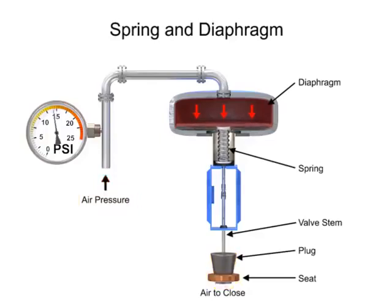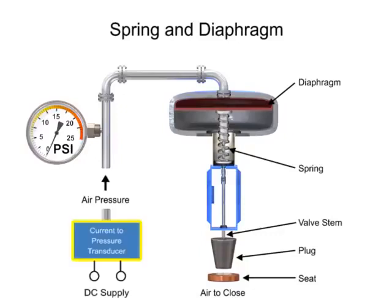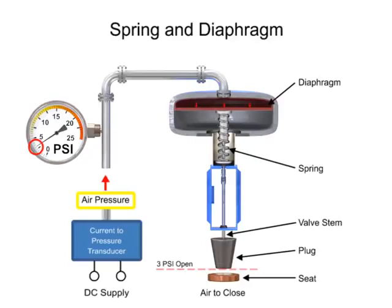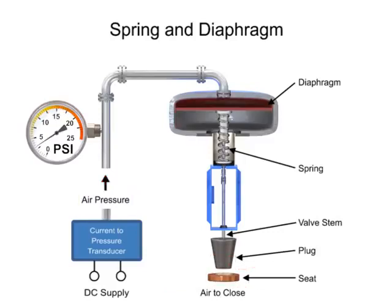With no air pressure, the restrictor is pushed upward by the spring to act as a normally open control valve. To vary the position of the restrictor and flow through the valve, a current to pressure transducer can be used to provide a 3 to 15 PSI signal to the diaphragm. At 3 PSI the valve is maintained open, and at 15 PSI the valve is maintained closed. Pressures between the 3 to 15 PSI range proportionally change the flow of the valve.